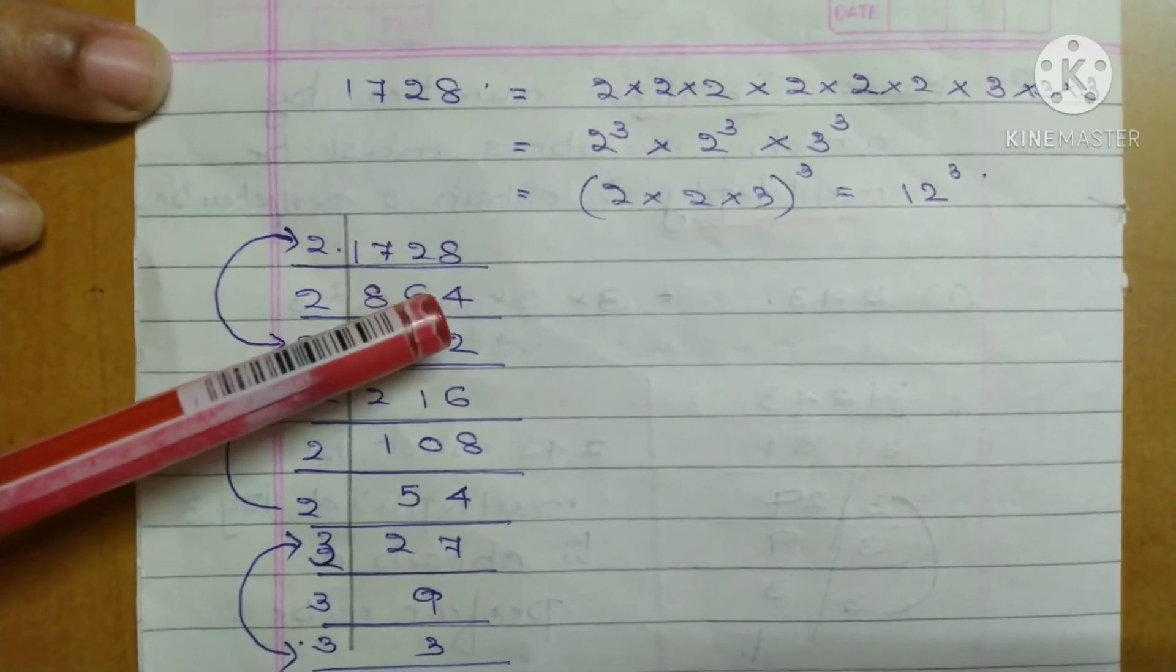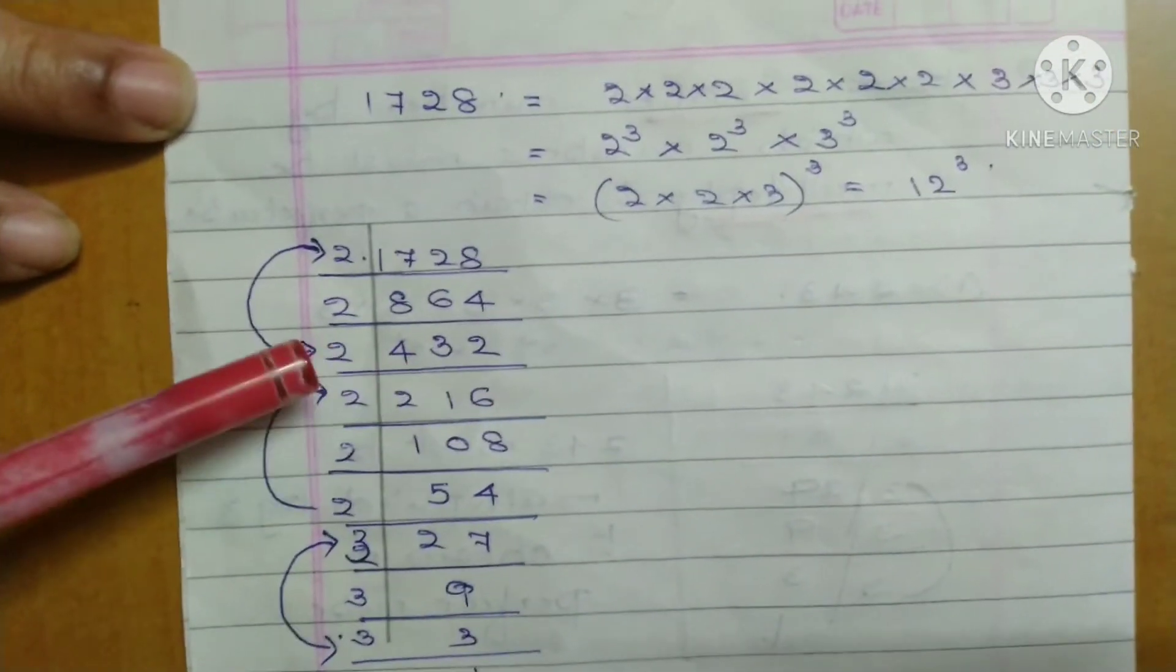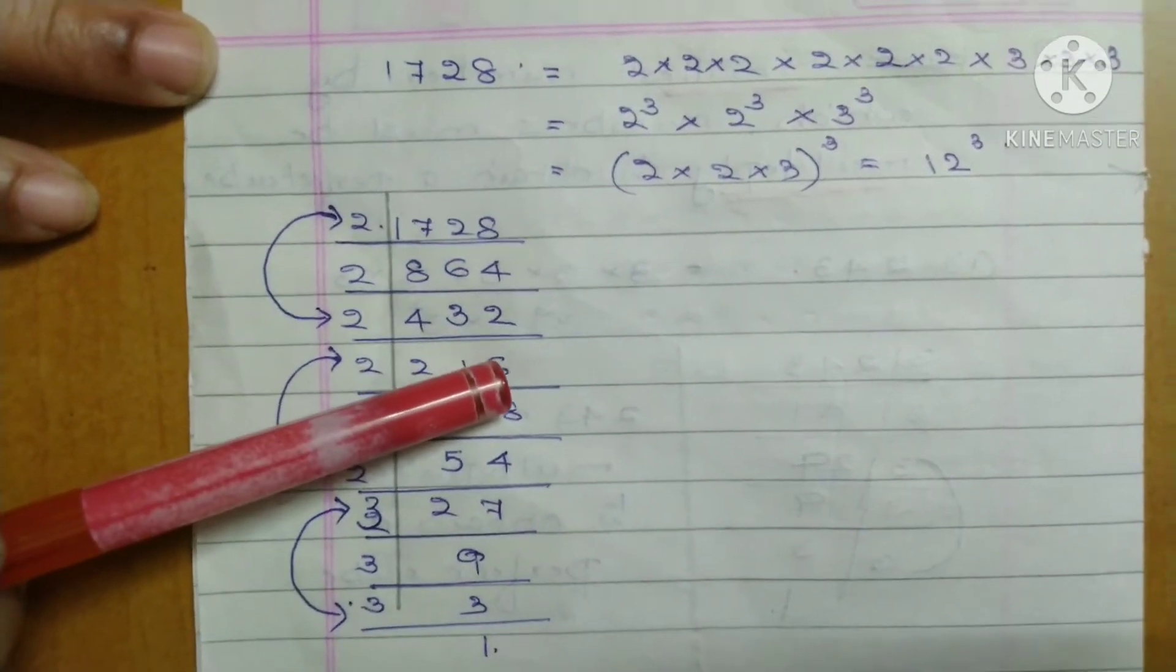We get 864, again by 2 gives 432, again by 2 gives 216.